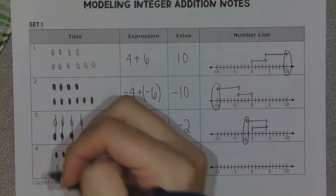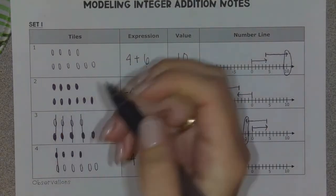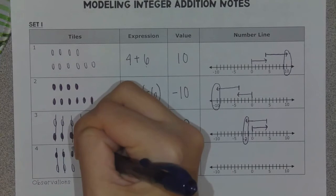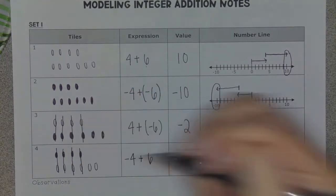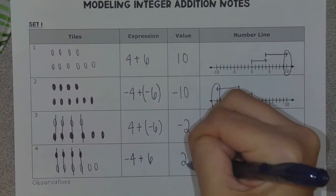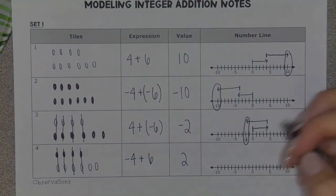So I'm going to get rid of any zero pairs that I see — one positive and one negative. When you combine them together, they have a value of zero. And all I'm left with this time is a value of positive two.